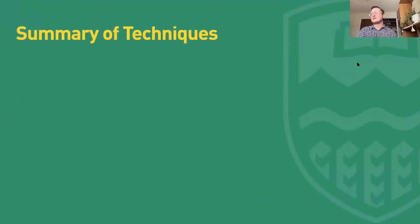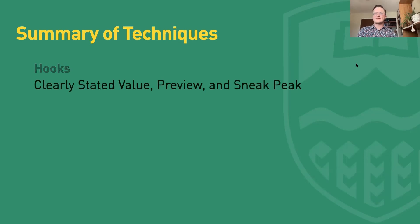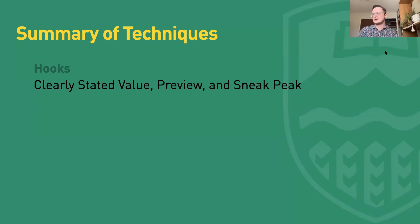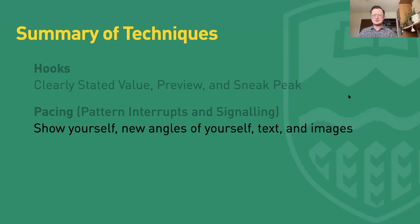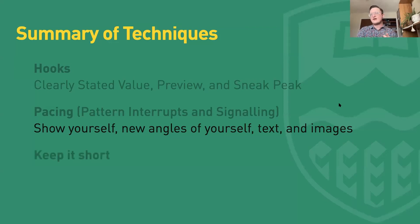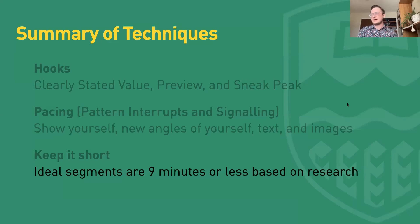Let's recap everything we've talked about today. We started with hooks and the different types: the clearly stated value, where you tell your learner straight up what the value of your educational video is; the preview, where you make a little promise about what they can expect later on; or the sneak peek, where you show that big climactic moment right off the top — remembering that can be limited by your content. For pacing, we talked about pattern interrupts and signaling. Pattern interrupts: show yourself from different angles using crop to fill punch-in or the Ken Burns effect for movement. Signaling: show relevant text keywords, stock footage, or relevant animations to help engage students and help them process the information.